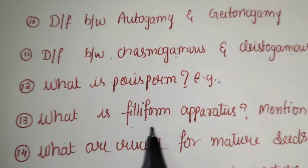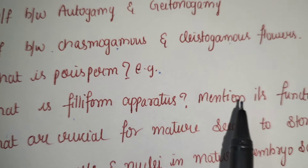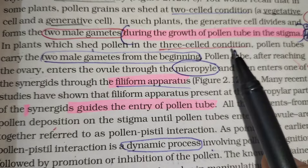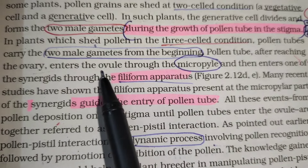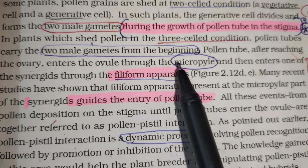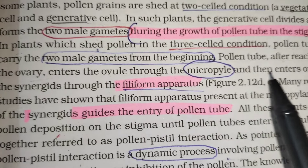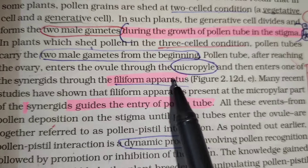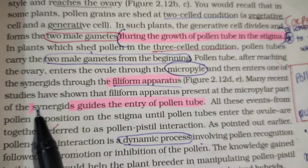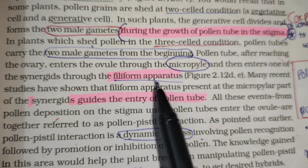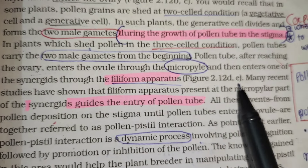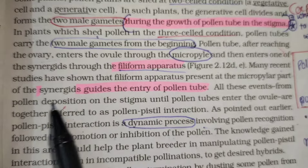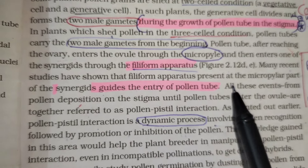What is filiform apparatus? Mention its function. Pollen tube after reaching the ovary enters the ovule through the micropyle and then enters one of the synergids through the filiform apparatus. Many recent studies have shown that the filiform apparatus present at the micropylar part of the synergids guides the entry of the pollen tube.